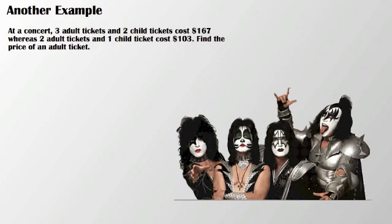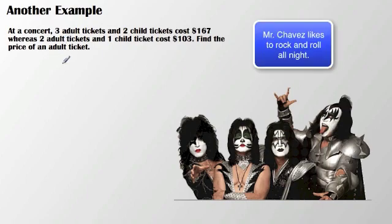Let's take a look at another example. At a concert, 3 adult tickets and 2 child tickets cost $167, whereas 2 adult tickets and 1 child ticket costs $103.